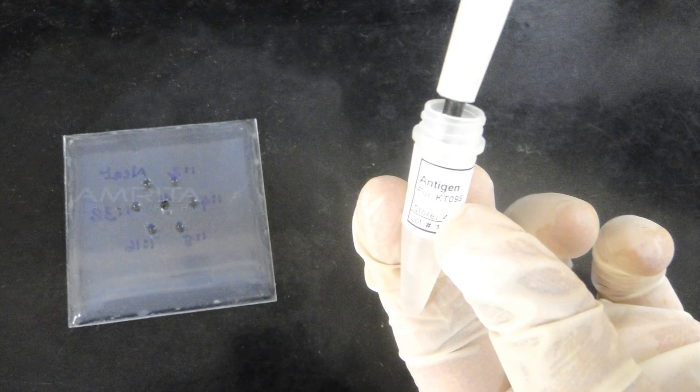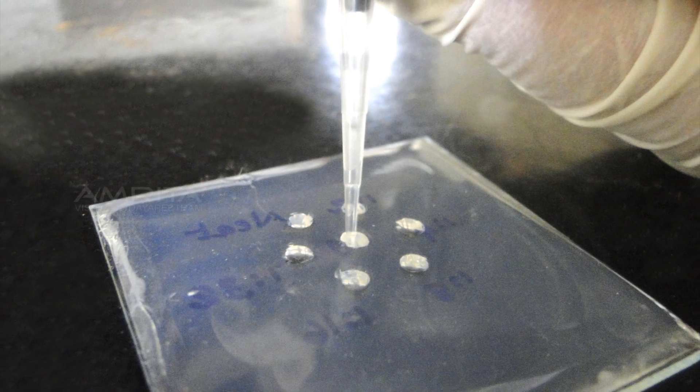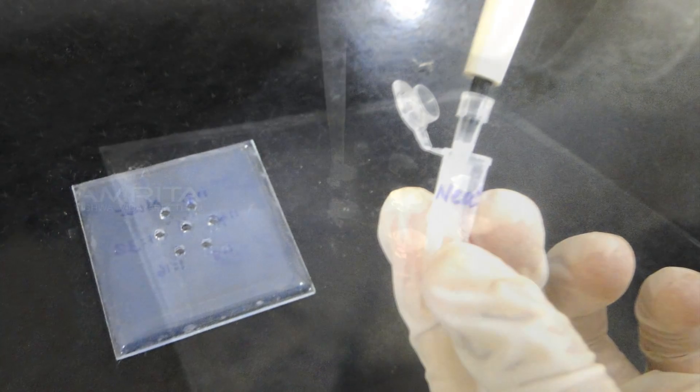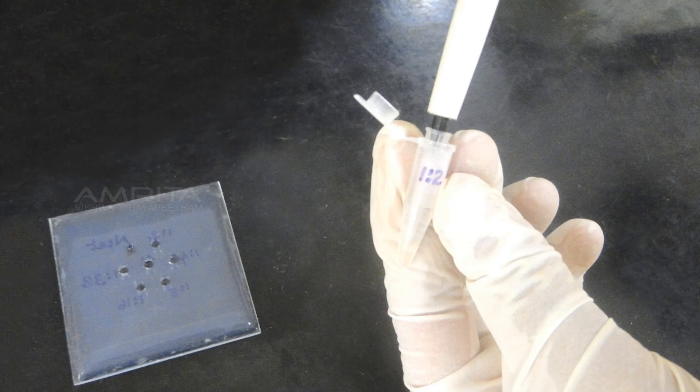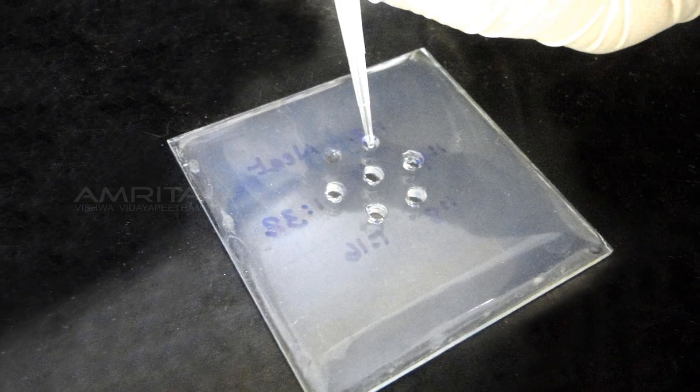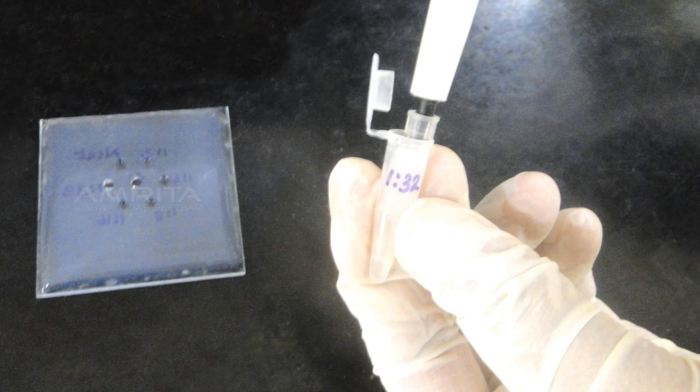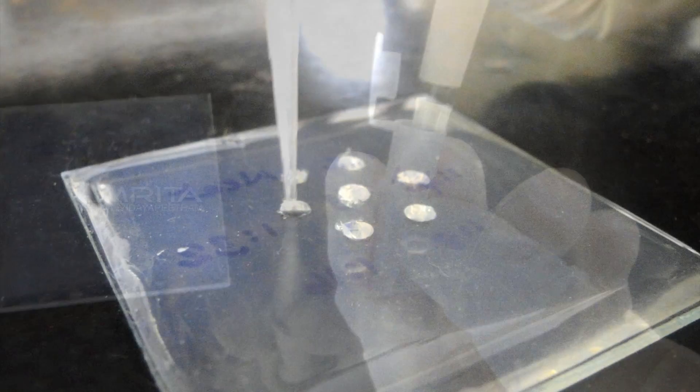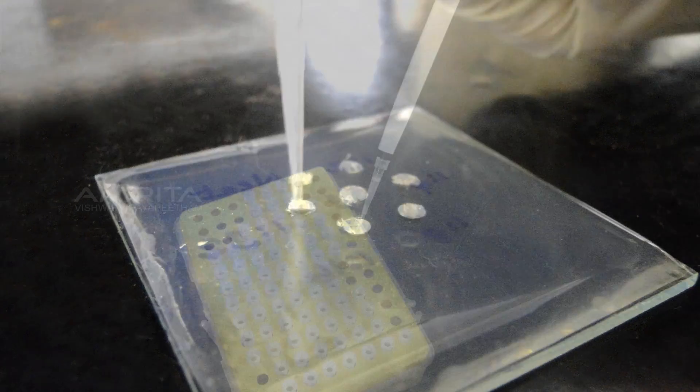Add 10 μL of the antigen to the centre well and 10 μL each of neat undiluted, 1:2, 1:4, 1:8, 1:16, and 1:32 dilutions of antiserum into the surrounding wells. Use a new tip each time.